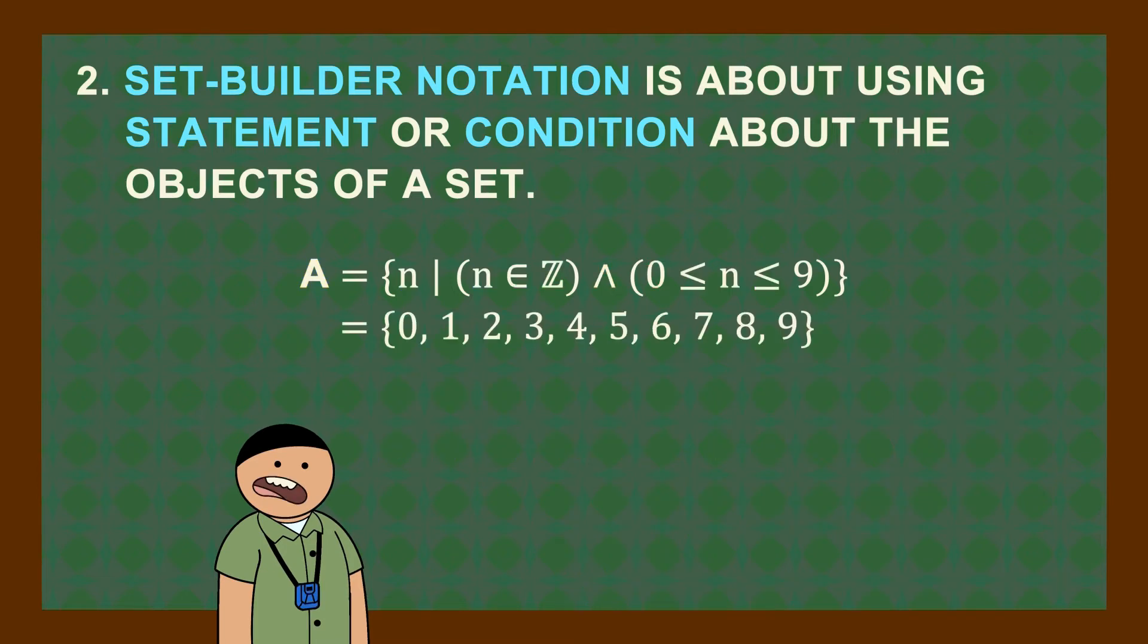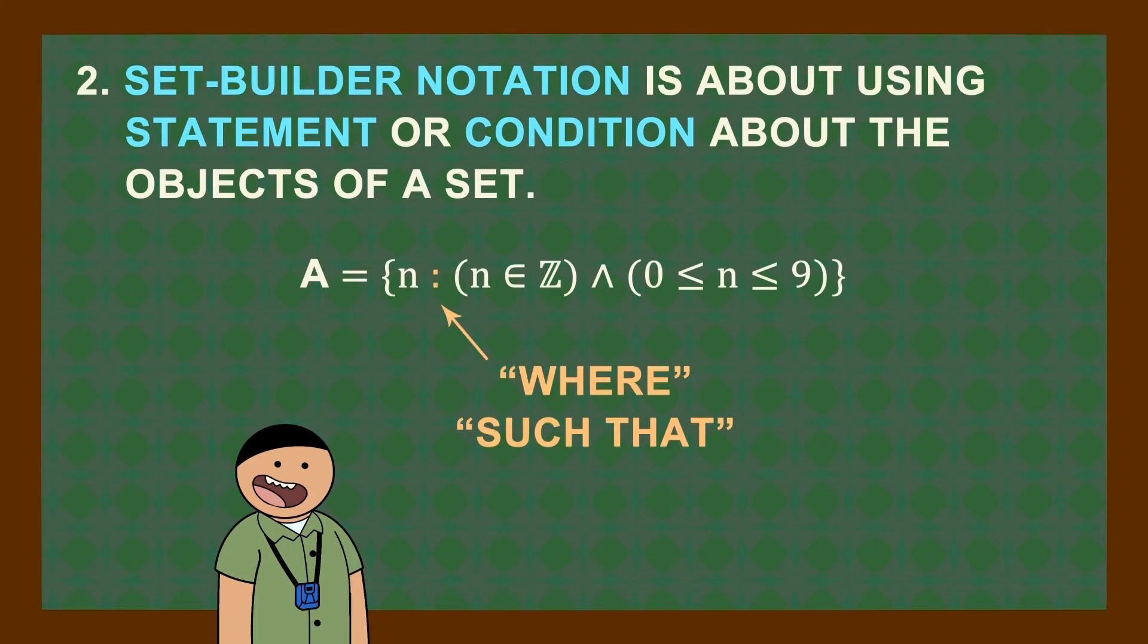It means it's just 0, 1, 2, 3, 4, 5, 6, 7, 8, 9. Other references use colon to mean where or such that, but I feel more use in using vertical bars in situations like this.